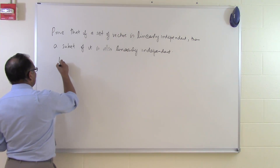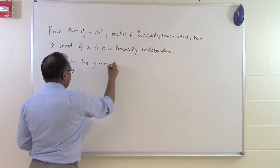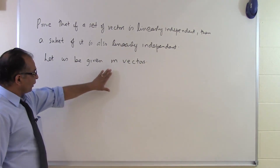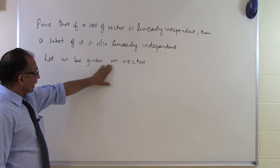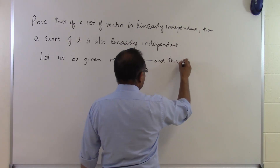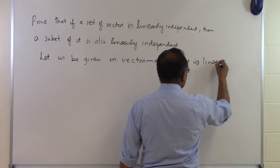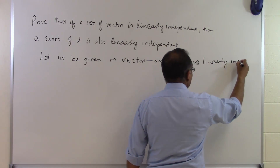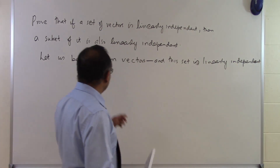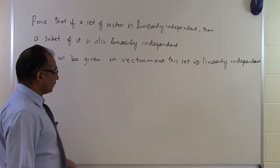Suppose we are given m vectors and it is given that this set is linearly independent. So you are given a set of m vectors and these m vectors are linearly independent.